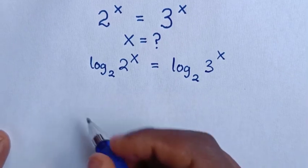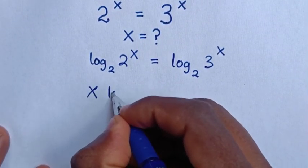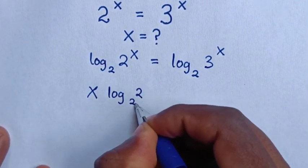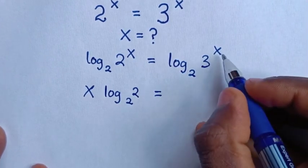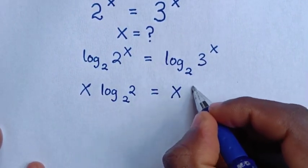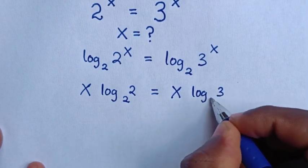Then this power of x will move to the base. So it will be x log of base 2 is equal to, also in here x will move to the base, it will be x log of base 2 of 3.